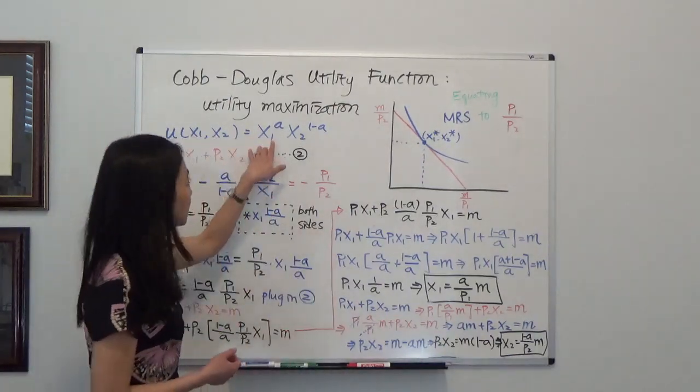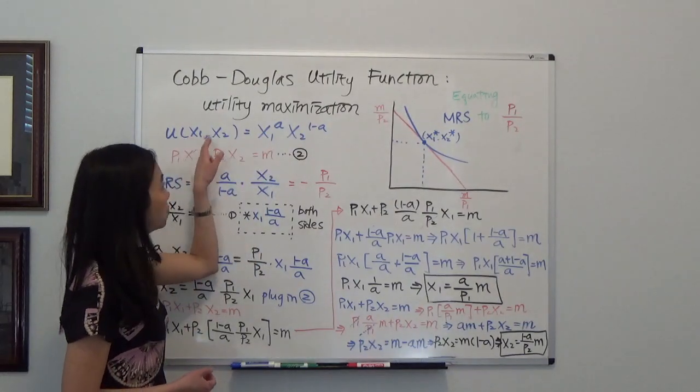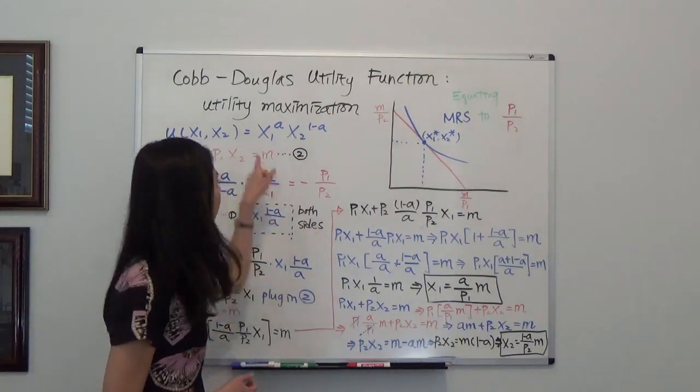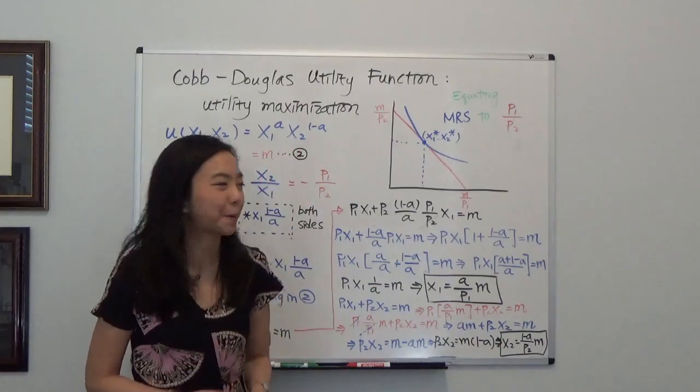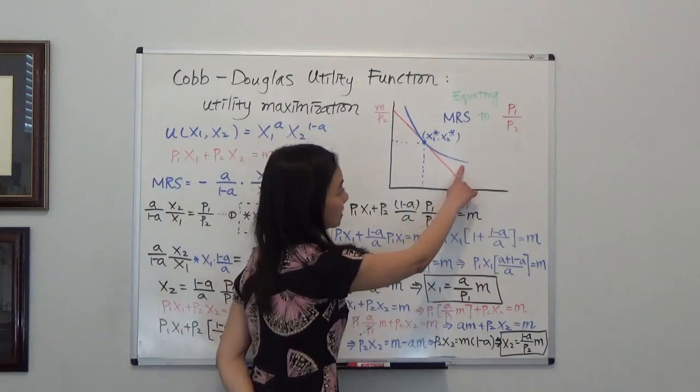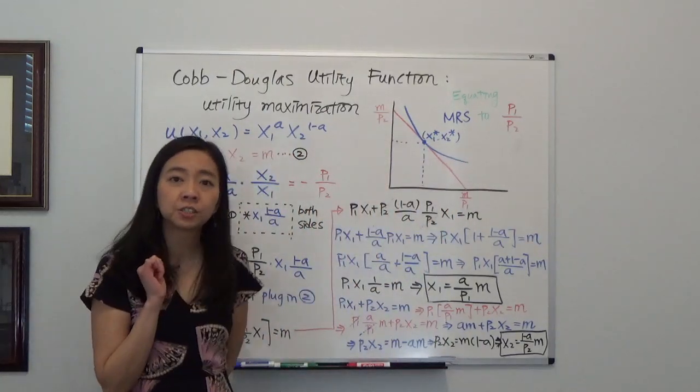So you can see this is our Cobb-Douglas utility function. Utility of good 1 and good 2 is equal to x1 to the a and x2 to the 1 minus a's power. And you can see that is our indifference curve corresponding to our utility function.